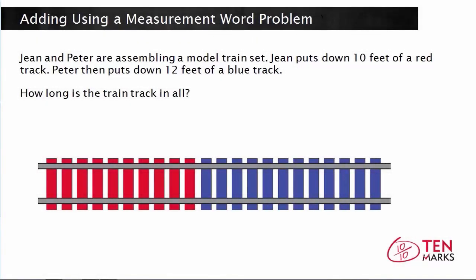In this lesson, you will learn how to add two measurements together. Let's solve a problem. Jean and Peter are assembling a model train set. Jean puts down 10 feet of a red track, and Peter then puts down 12 feet of a blue track. How long is the train track in all?